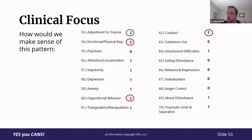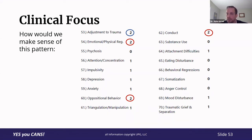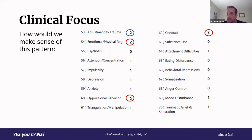Instead of having four different things that we're working on at the same time, we can see that there's one cluster of three externalizing concerns and then there's the adjustment to trauma concern. So it may only be that there are two things we're focusing on in treatment, and we just have to sequence those two things, as opposed to trying to sequence four different things.